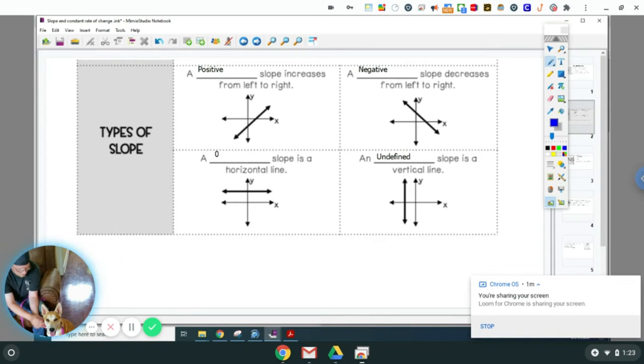So when we talk about slope, generally you read the line from left to right. So you know how you read a sentence. You start with a positive slope increases. So you're reading from left to right.